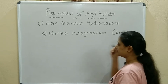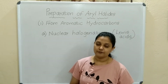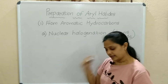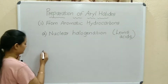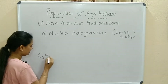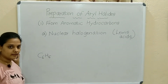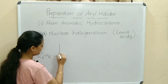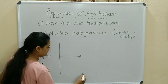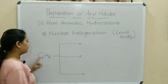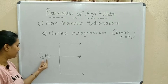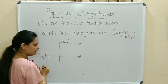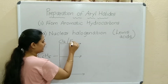Examples of Lewis acids are FeCl3 and FeBr3. Let us see the reactions. First, nuclear halogenation: benzene C6H6 is treated with chlorine Cl2 in the presence of Lewis acid FeCl3.